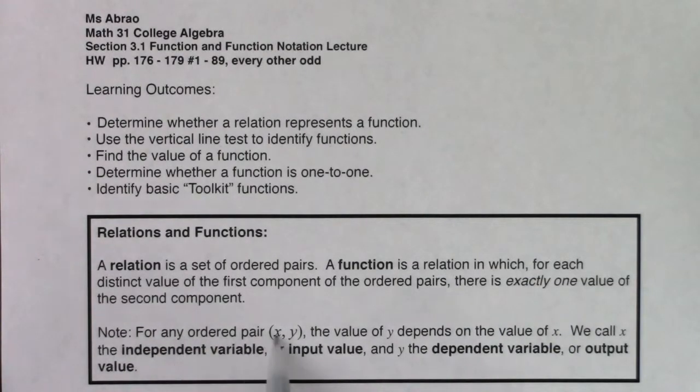Just a note: for any ordered pair (x, y), the value of y depends on the value of x. We call x the independent variable or input value. Y gets labeled the dependent variable or output value.